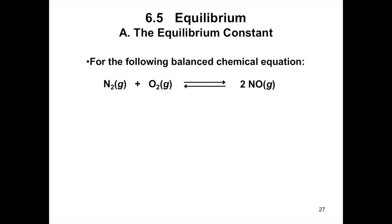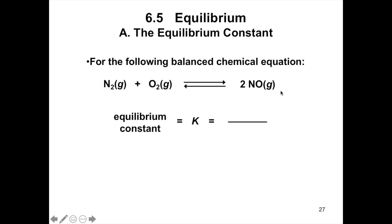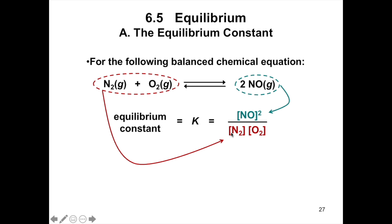The expression for the equilibrium constant for any reaction can be written from a balanced equation, as shown for the reaction of nitrogen and oxygen gas to form nitrogen monoxide. Since K is a constant, it determines the ratio of products to reactants at equilibrium no matter how much of each substance is present at the beginning. We write K as the concentration of nitrogen monoxide in brackets raised to the power of 2, divided by the concentration of nitrogen multiplied by the concentration of oxygen. The coefficient becomes the exponent.